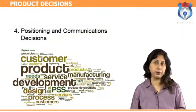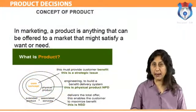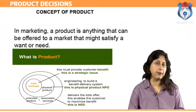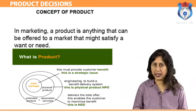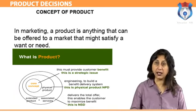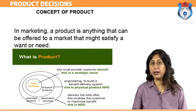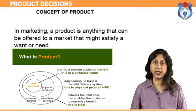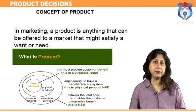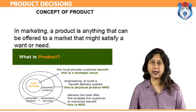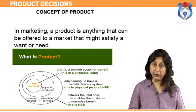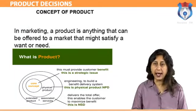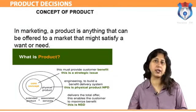Let us talk about the concept of a product. In marketing, a product is anything that can be offered to a market that might satisfy a want or need. In retailing, products are called merchandise. In manufacturing, products are purchased as raw materials and sold as finished goods.